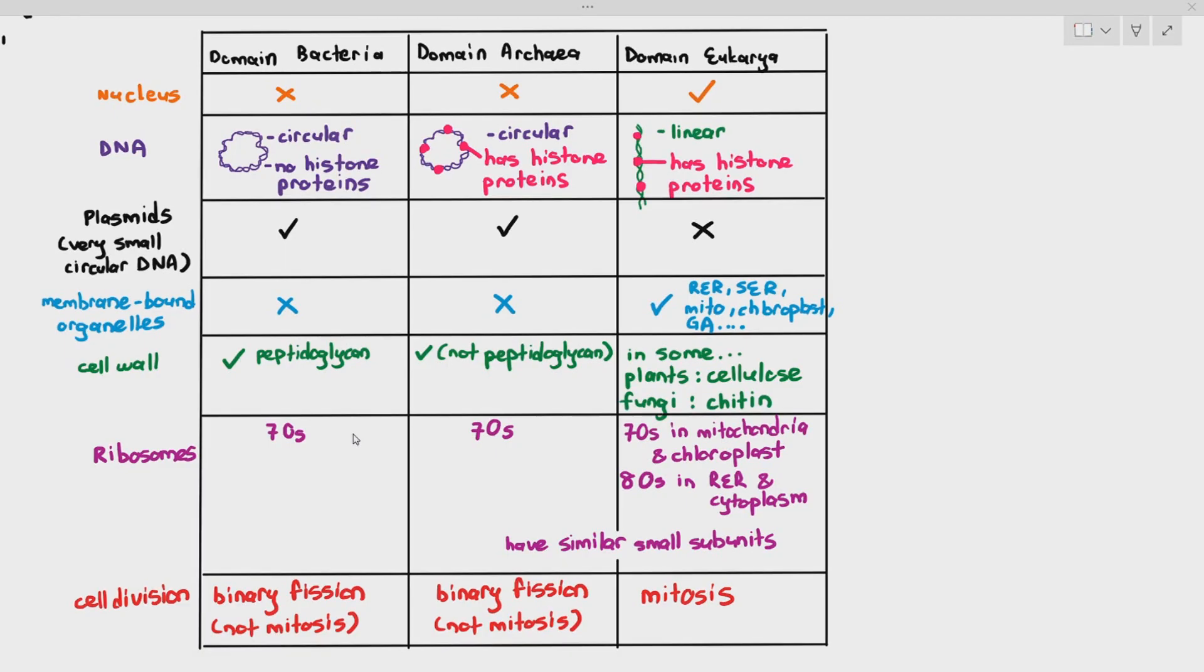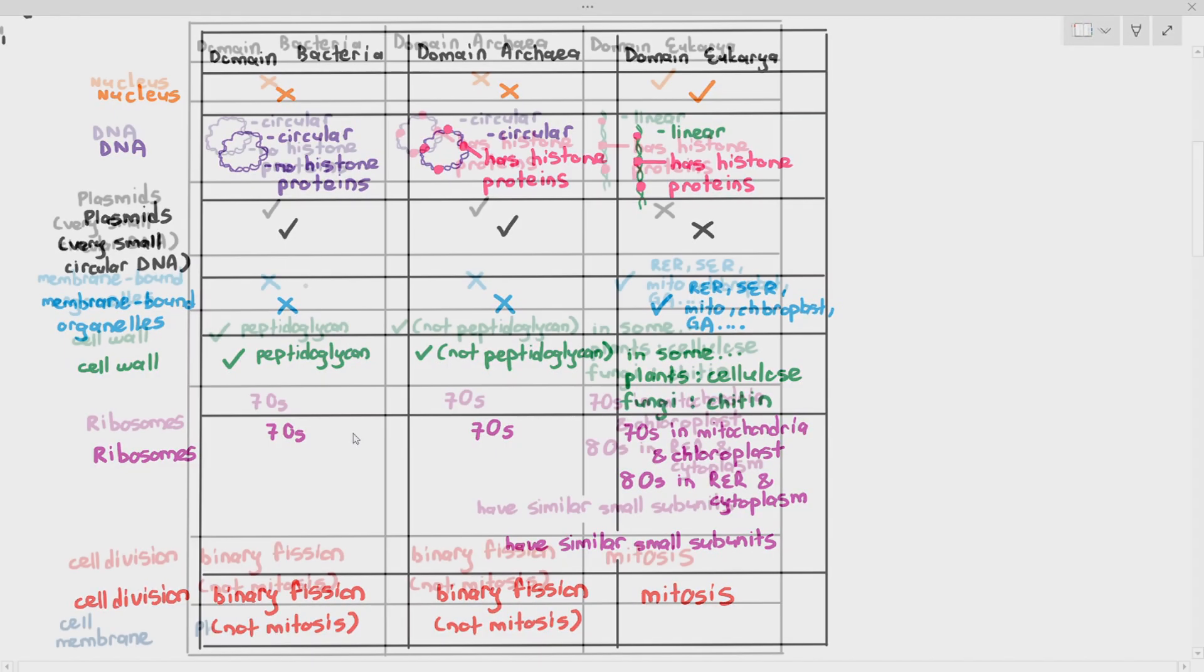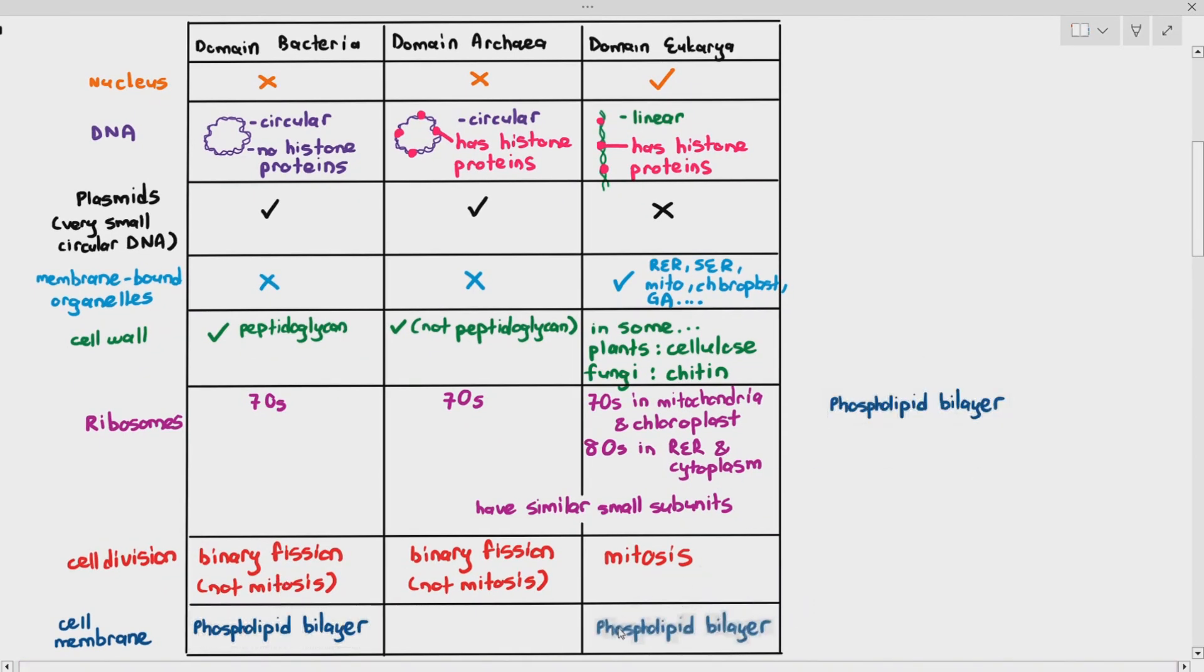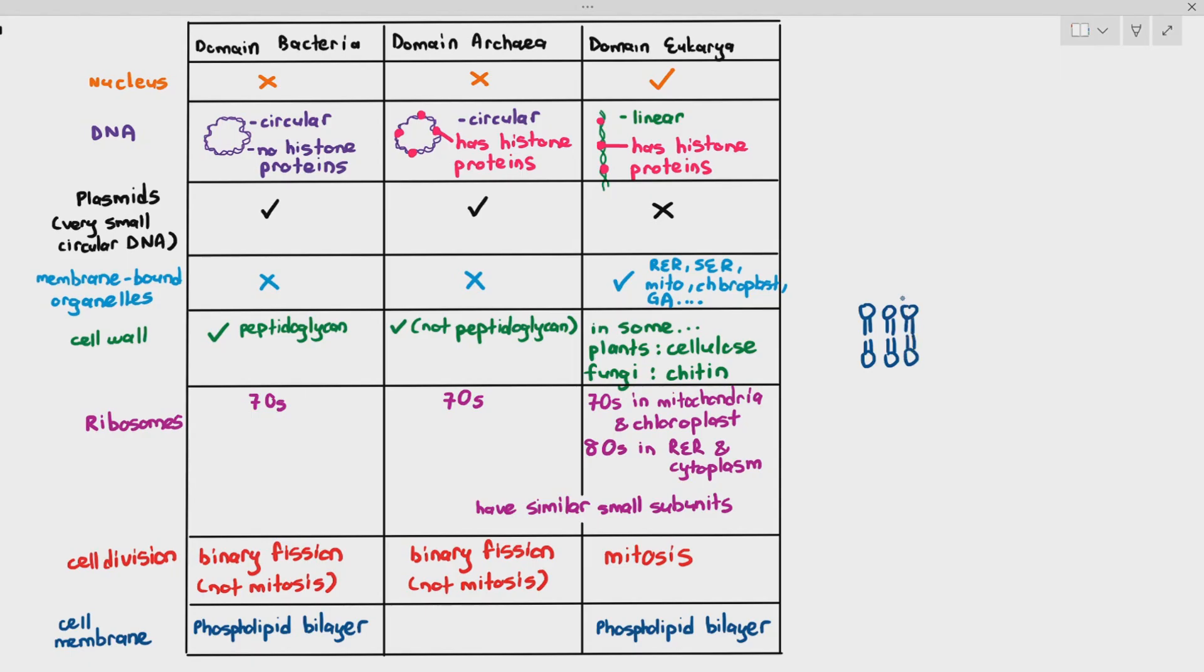Another thing that I also want to add at the bottom here is their cell membrane. As a comparison of the cell surface membrane for bacteria, archaea and eukarya, the bacteria and eukarya domains, their cell surface membranes are comprised of something known as the phospholipid bilayers. We've talked about bilayers in chapter 4, but I'm just going to draw it out over here. You can see the two phospholipid layers. I'm drawing it out and I'm also going to highlight it in different colors.